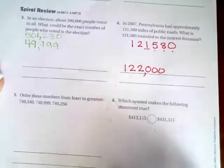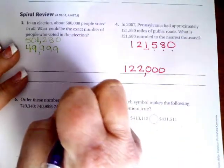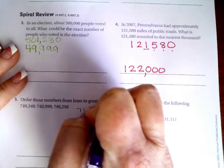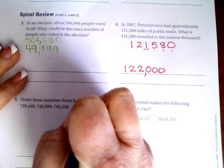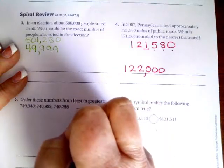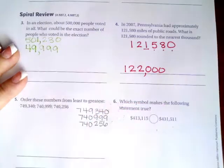Okay. We are going to go down to number five. It says, order these numbers from least to greatest. So I'm going to go ahead and write them down. Seven, four, nine, three, four, zero. Seven, four, zero, nine, nine, nine. And seven, four, zero, two, five, six.